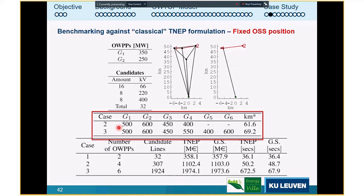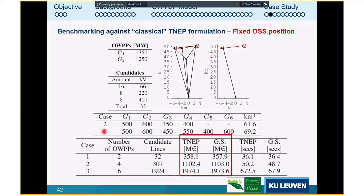Scaling up: a problem with four offshore wind power plants averaging 61.6 kilometers to shore and one with six wind power plants at almost 70 kilometers offshore. Solving both with both algorithms produces the same objective functions and the same topology layouts. However, at around 2,000 candidate lines — the six wind power plant case — the greedy search is approximately 10 times faster.